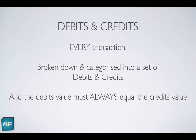Every transaction is broken down into a set of debits and credits. The key rule is: the debits value must always equal the credits value. That rule is what allows the accounting equation to always balance. So you look at a transaction, break it down into its corresponding debits and credits, and these debit values must always balance with the credit financial values.